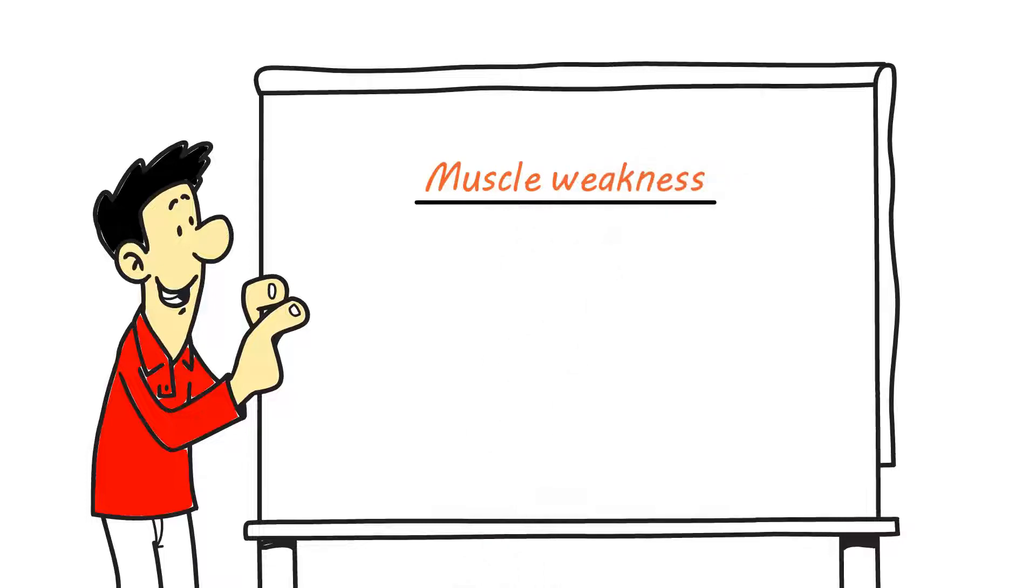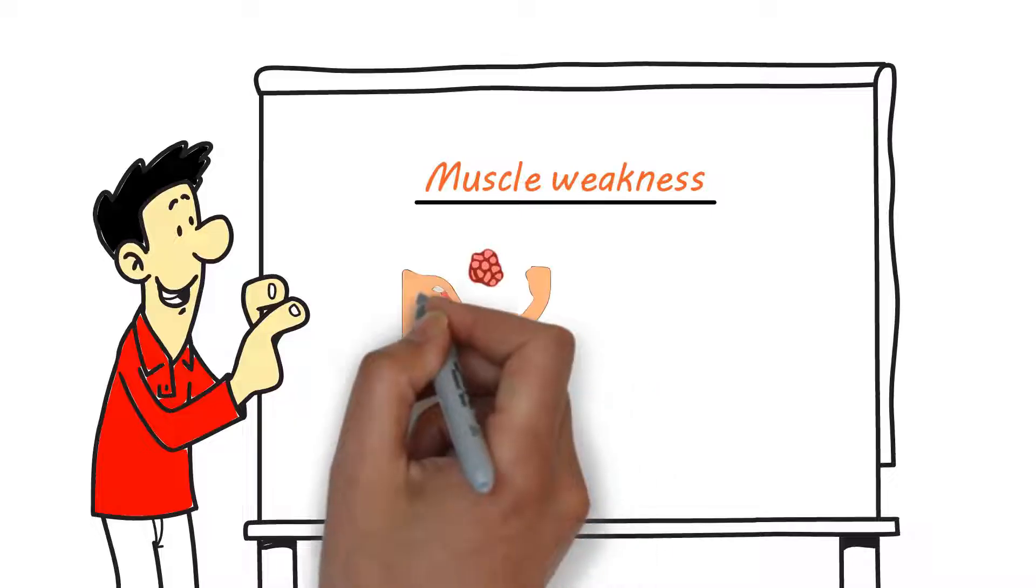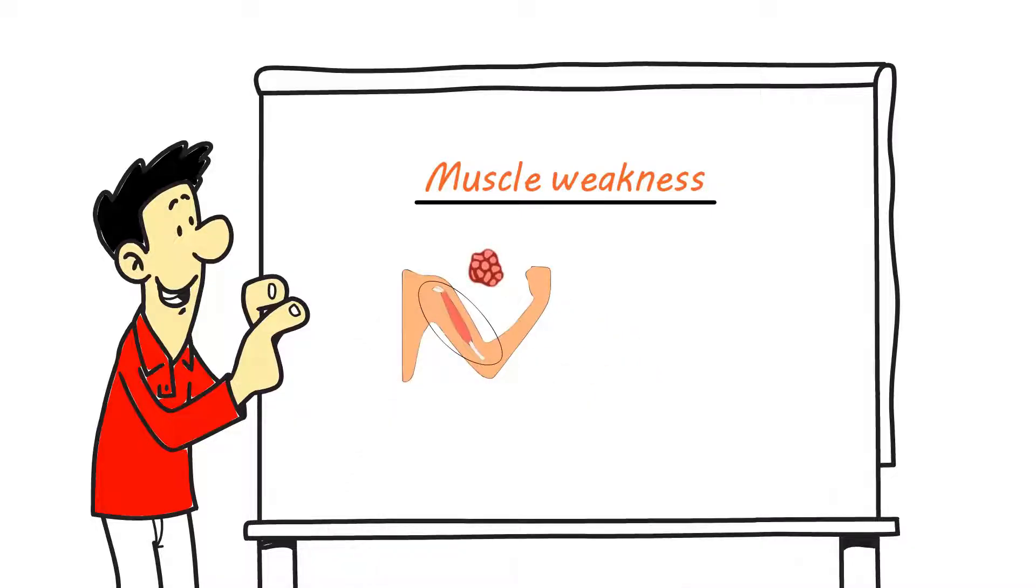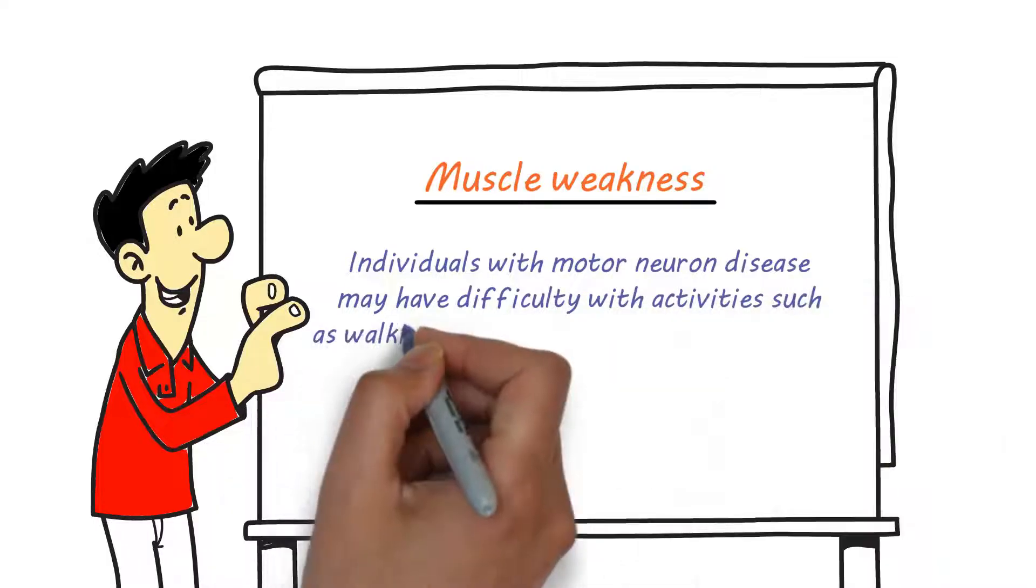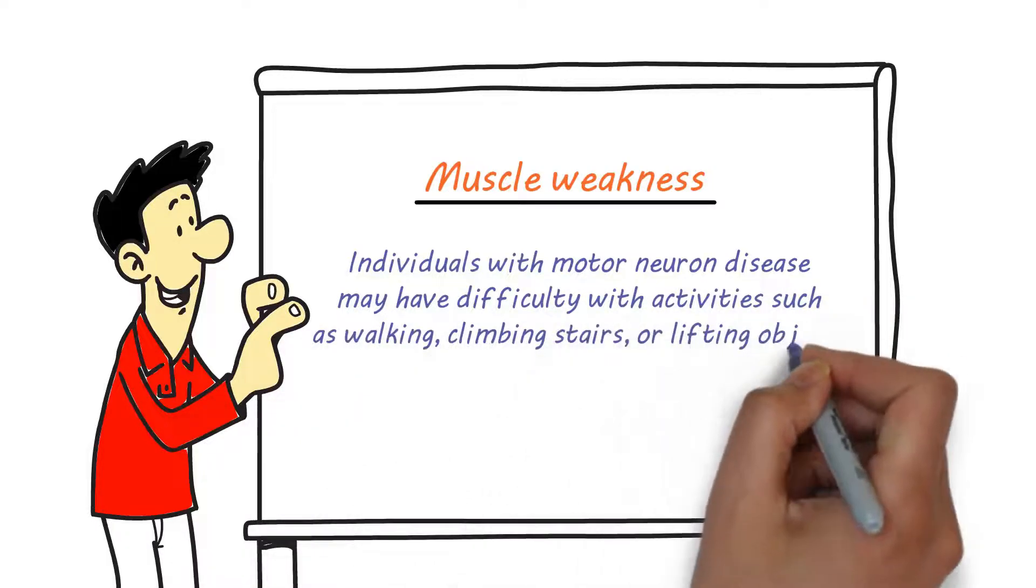Muscle Weakness. Muscle weakness is one of the most common symptoms of motor neuron disease. It typically begins in the limbs and gradually progresses, affecting other areas of the body over time. Individuals with motor neuron disease may have difficulty with activities such as walking, climbing stairs, or lifting objects.